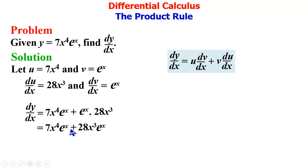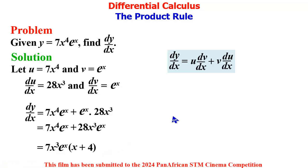e raised to the power x is also a factor so that we now have 7x raised to the power 3 e raised to the power x times (x plus 4). We then close the brackets and that is the solution of the problem represented in this video.